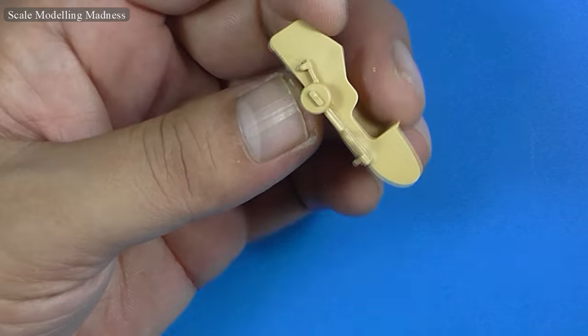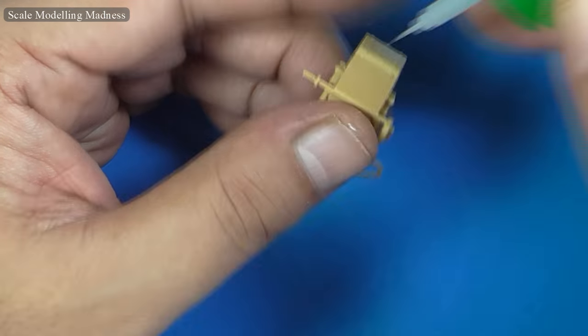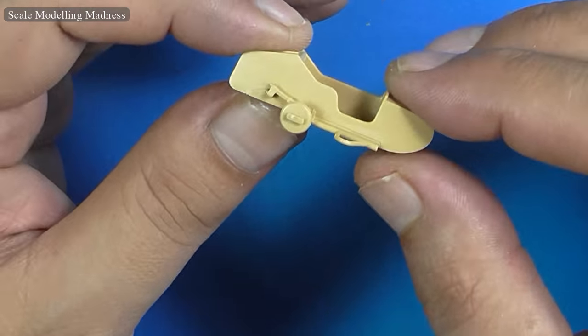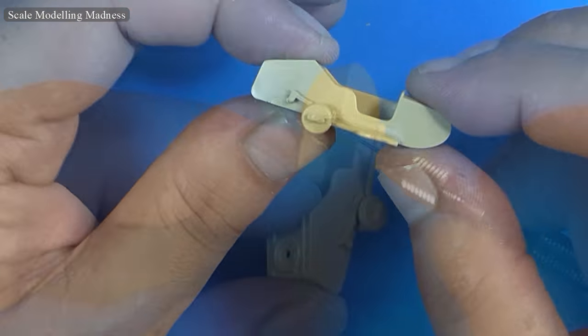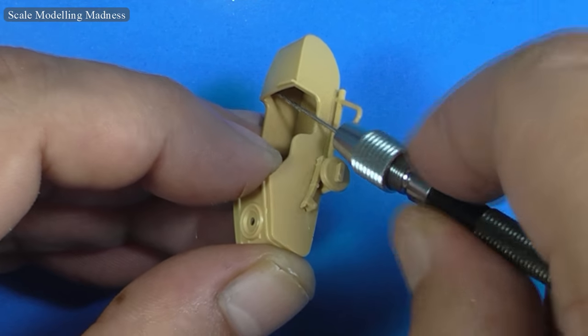The sidecar was fairly easy to put together. Just don't forget to drill holes for mounting the machine gun like I did. I then had to drill at a rather uncomfortable angle but in the end it all worked out fine.